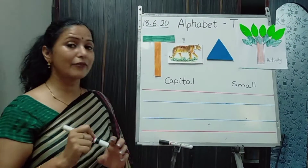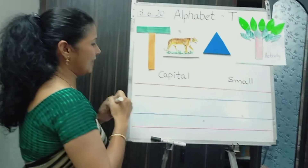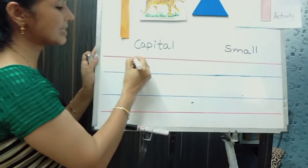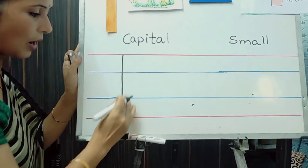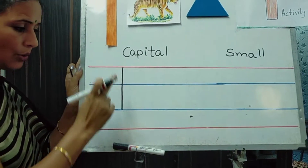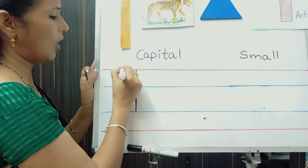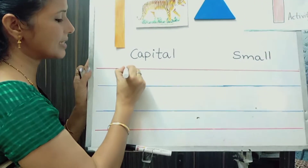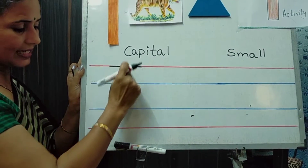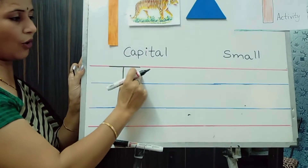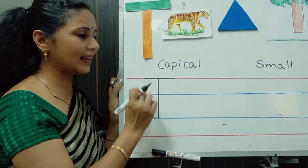Now I will show you how to write letter T. Make a standing line here, from up to down — capital line to tail line — we will draw a standing line. And as I told you, we will draw a slipping line on top of the standing line. It makes capital letter T. Capital letter T!